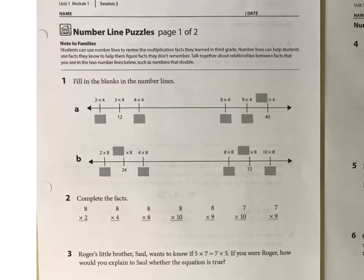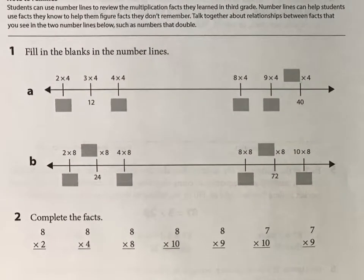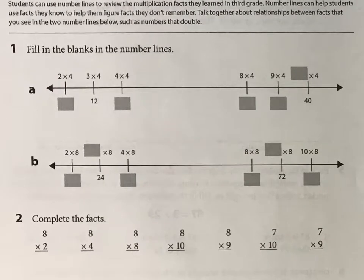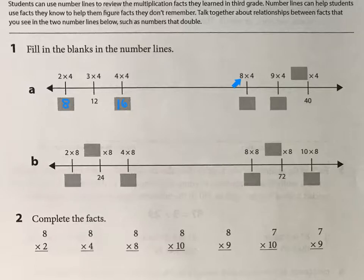We're going to take a look at the first page. You can figure out how it works on your own. The multiplication fact is on top, like 2 times 4, and that would be 8, which goes below. Use the number line to help you figure these out. For example, I'm counting by 4s here, so 4 times 4 is 16. To go from times 4 to times 8, you can simply just double this number, so use that to help you.